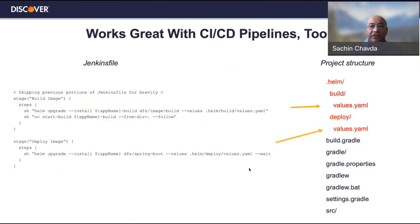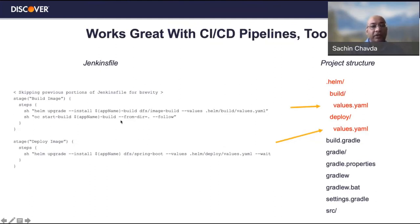This also works with a CI/CD pipeline. What I described in the previous two steps is the manual way of using the Helm CLI from a local workstation. But if a team has a Jenkins pipeline, they can plug in these two stages: a build stage using the image build chart to build the application image, followed by a deploy stage to deploy the application to the OpenShift platform.